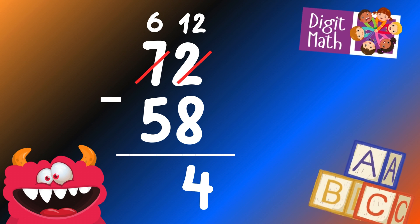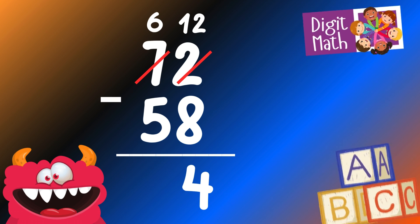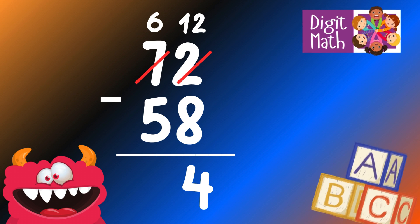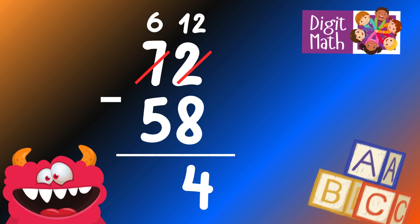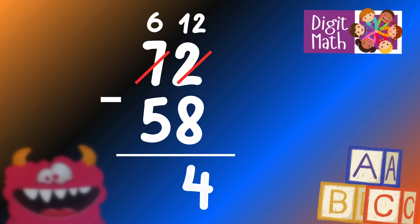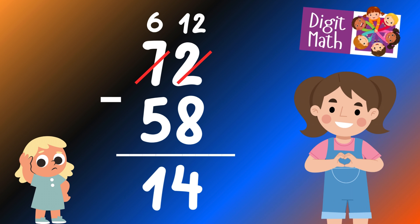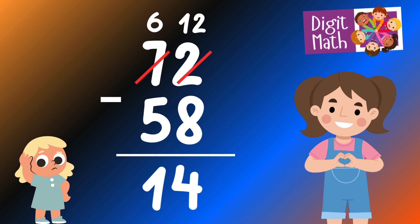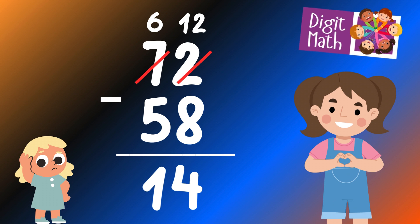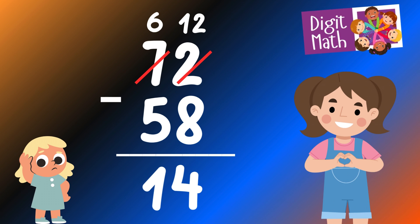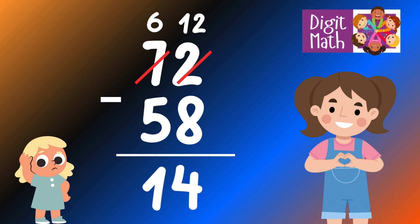In the Tens column, we now have 6. Subtract 5 from 6, which equals 1. So the final result is 72 minus 58 equals 14.